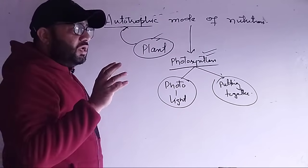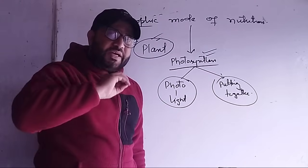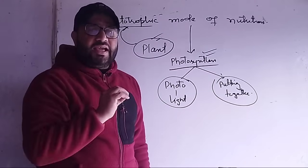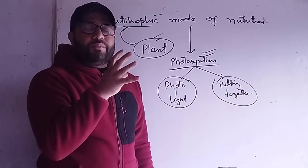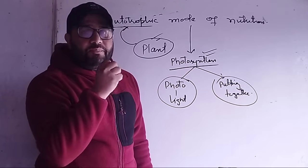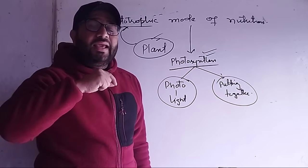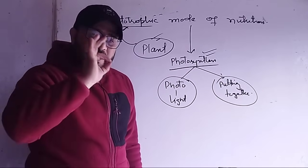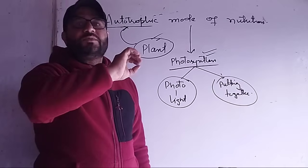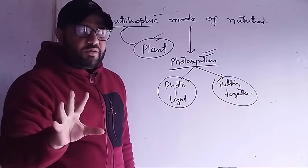Kuch organisms like kuch bacteria jo chemical ke dwara apna khana banate hain, unko hum chemo-autotrophs kehte hain. Example: kuch sulfur bacteria.